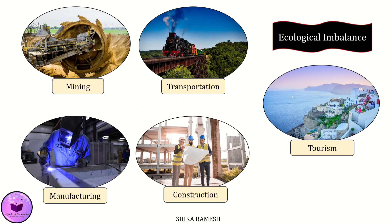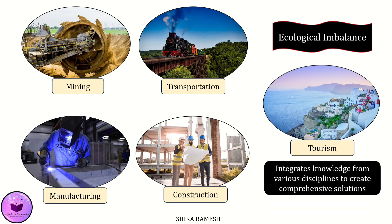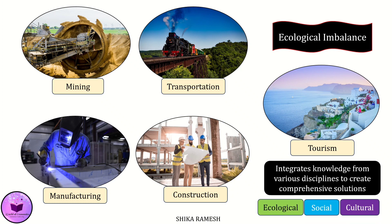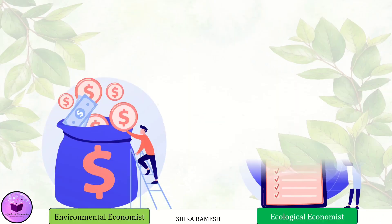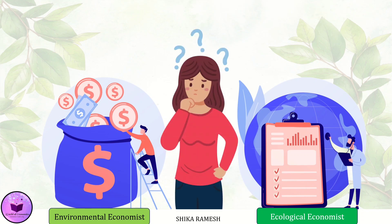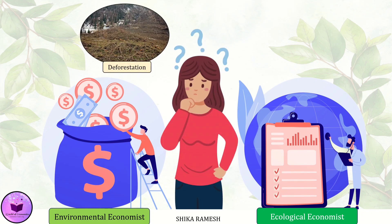Ecological economists approach these issues with a perspective that integrates knowledge from various disciplines to create comprehensive solutions. This ensures that solutions not only address the economic aspects of a problem but also its ecological, social and cultural dimensions as well. So how would an environmental economist and an ecological economist tackle an identical issue like, say, deforestation?